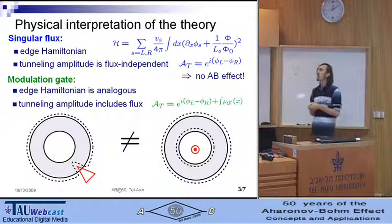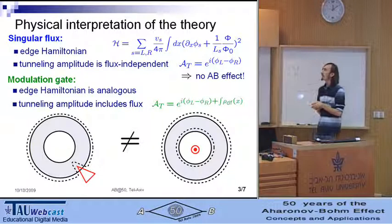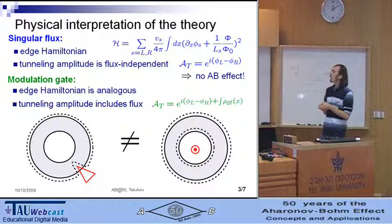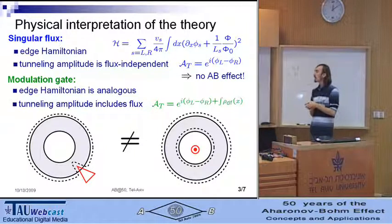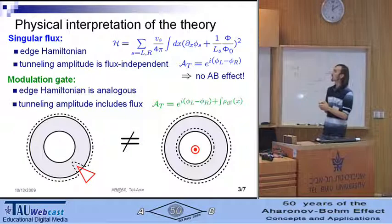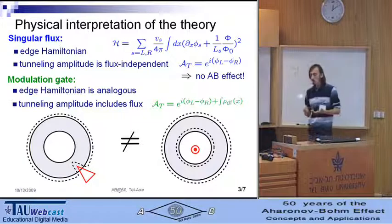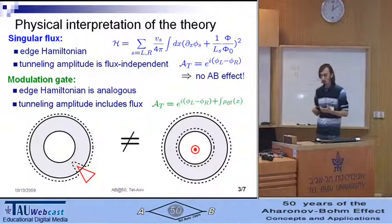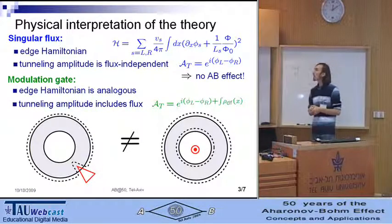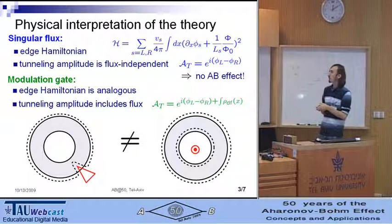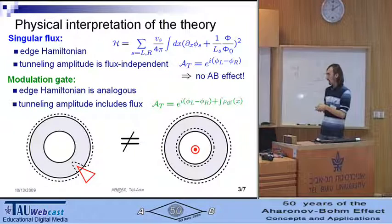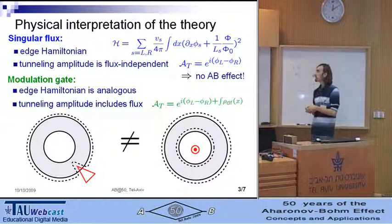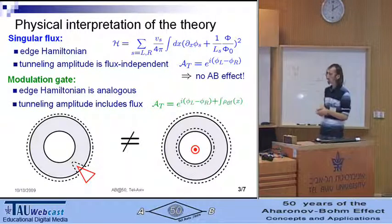Surprisingly, in case of singular flux, the amplitude of tunneling does not depend on the singular flux. Thus, there should not be an Aharonov-Bohm effect associated with this flux. In contrast, in case of a modulation gate, tunneling amplitudes do depend on the flux via this multiplier.